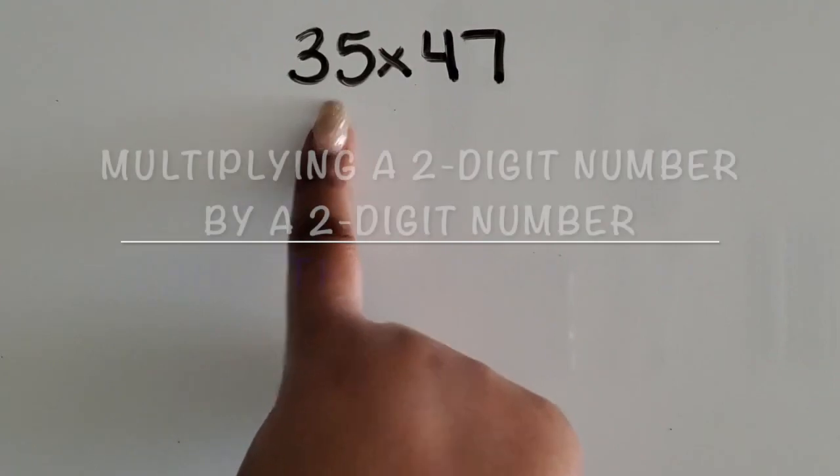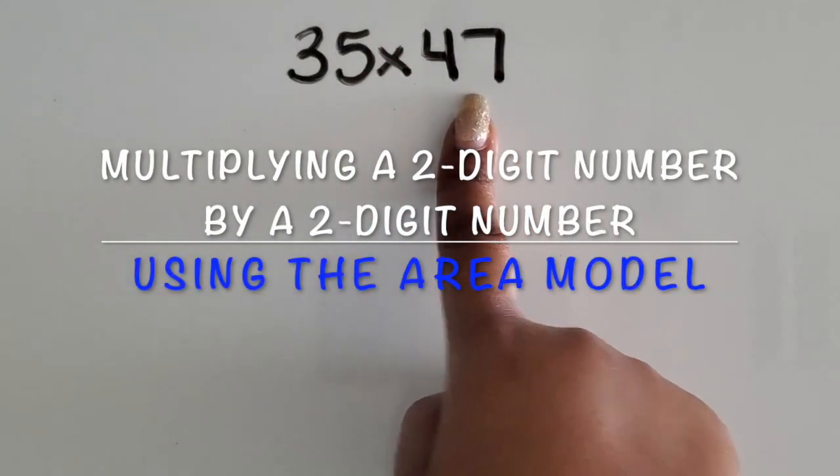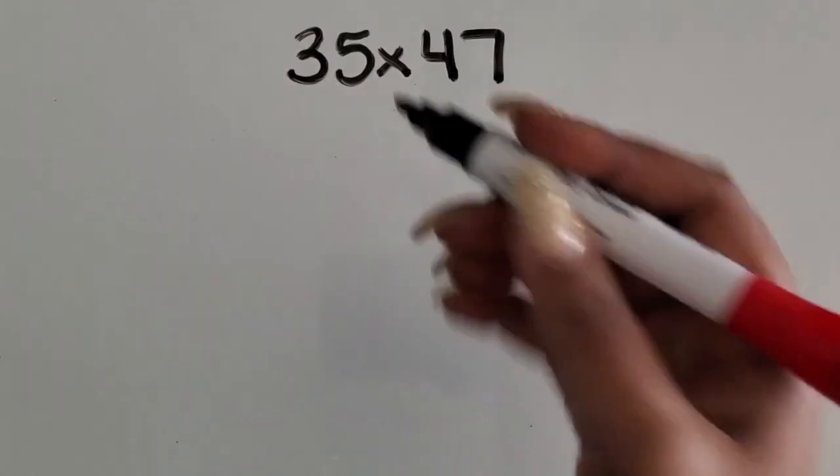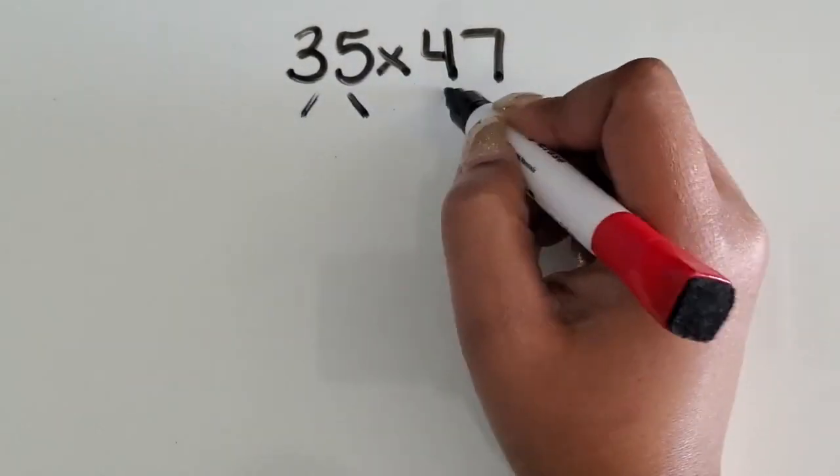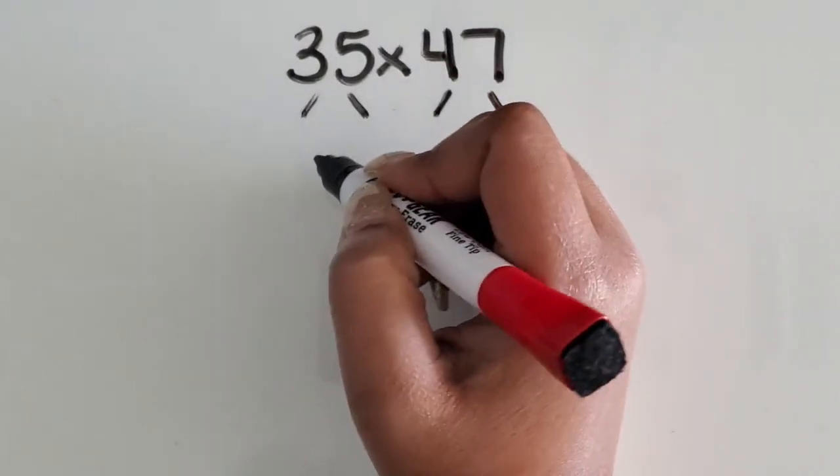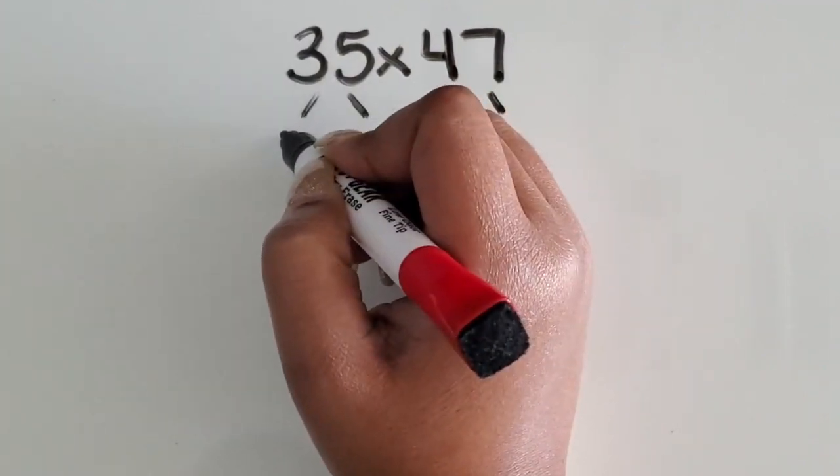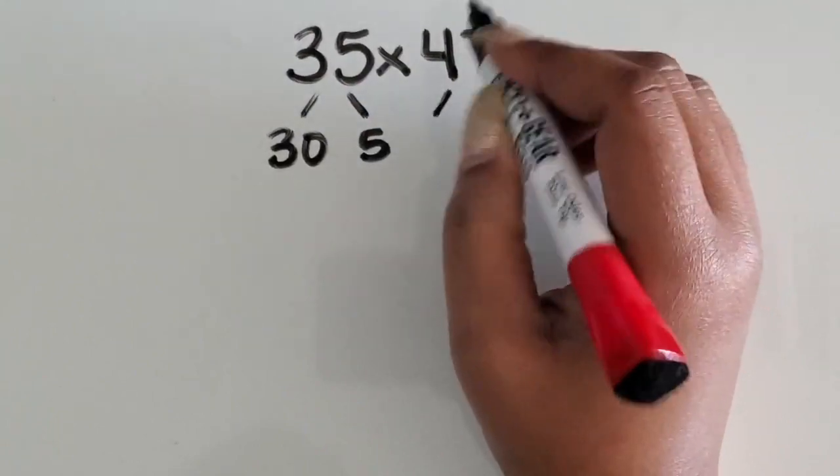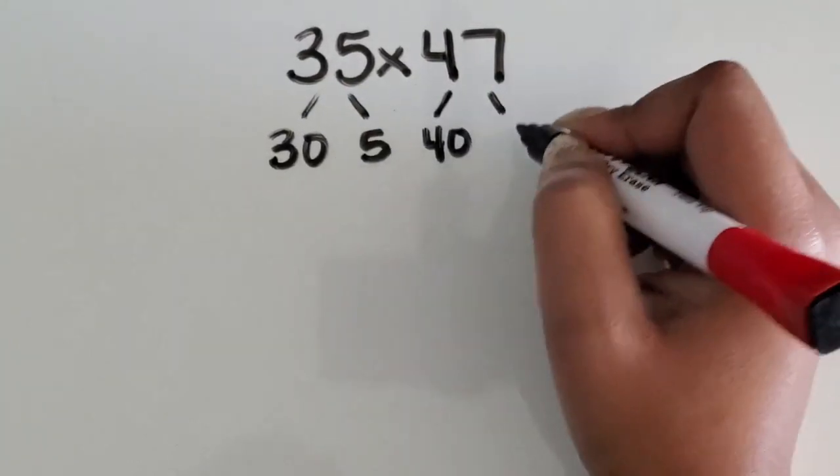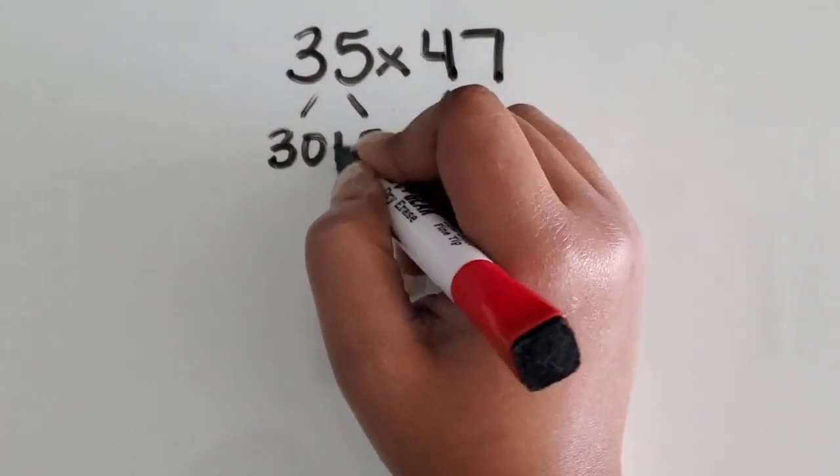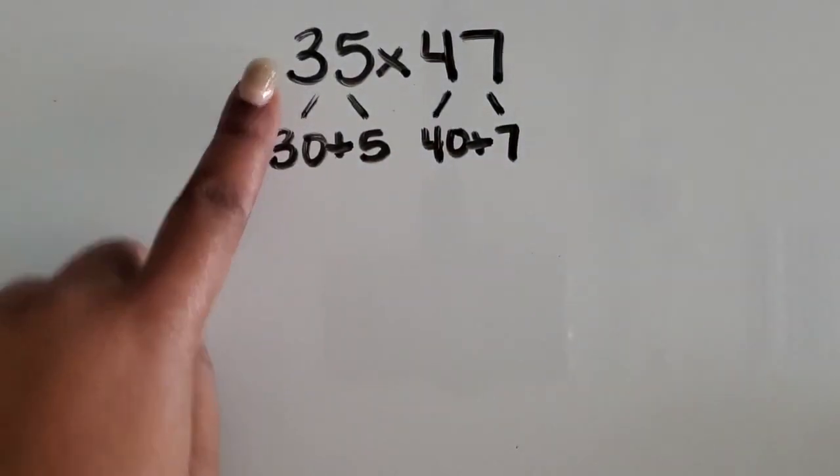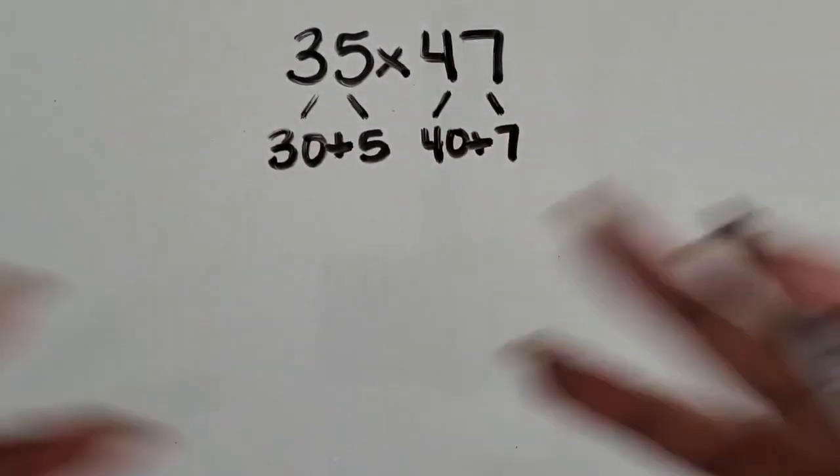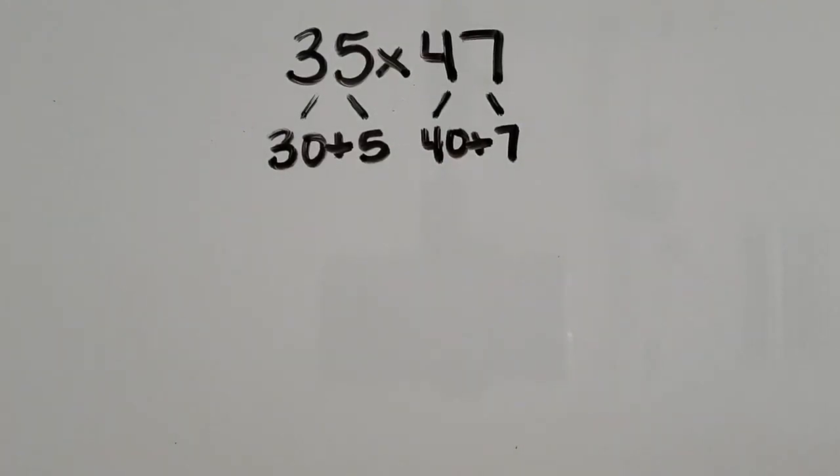We're going to multiply a two-digit number by another two-digit number. When sharing this strategy with students, you want them to practice decomposing those larger numbers or multi-digit numbers based on the place value so that they can multiply numbers that they're comfortable with. So we decompose 35 into 30 and 5, and then 47 into 40 and 7, similar to using the expanded form.